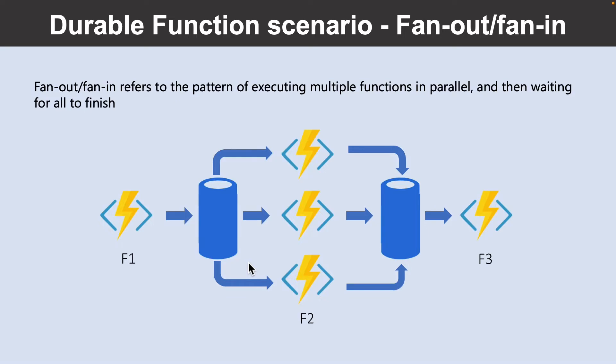The third scenario is Fan Out and Fan In. Fan Out/Fan In refers to the pattern of executing multiple functions in parallel and then waiting for all to finish. Often, some aggregation work is done on results returned from the functions. With normal functions, fanning out can be done by having the function send multiple messages to a queue. However, fanning back in is much more challenging — you would have to write code to track when the queue-triggered functions end and store function outputs. The Durable Functions extension handles this pattern with relatively simple code.